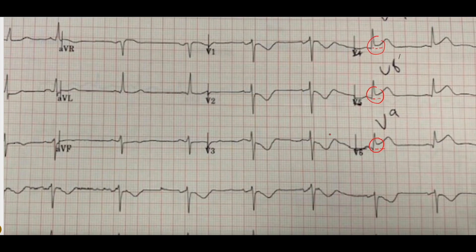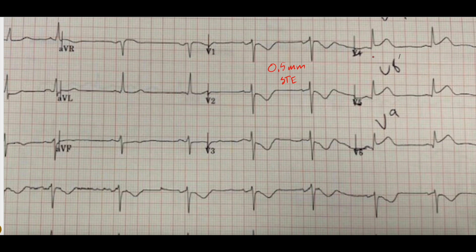Zooming in, you can see the small ST elevations more clearly. With posterior leads, you only need 0.5 millimeters of ST elevation for a positive result — you don't need the larger elevations required by traditional STEMI criteria. You can see those small but definite ST elevations in V7, V8, and V9, which is consistent with a posterior STEMI.